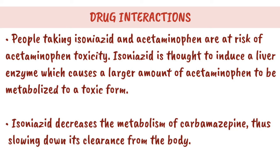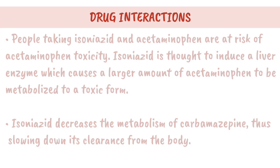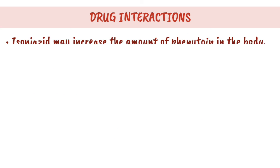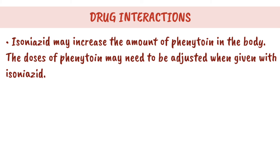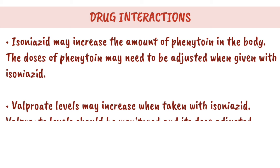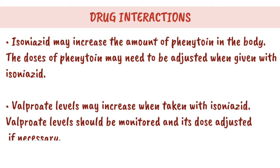Isoniazid decreases the metabolism of carbamazepine, thus slowing down its clearance from the body. Isoniazid may increase the amount of phenytoin in the body, so doses of phenytoin may need to be adjusted when given with isoniazid. Valproate levels may also increase when taken with isoniazid, and should be monitored with dose adjusted if necessary.